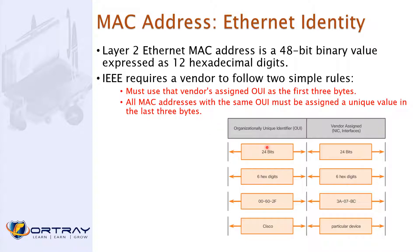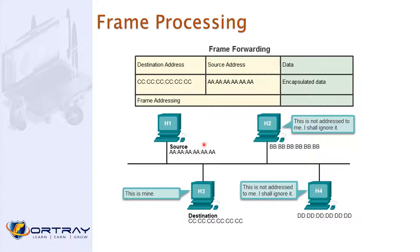In frame processing, a frame has a destination address and a source address plus encapsulated data. For example, if the destination is CCC and the source is AAA, a device with address BBB receives it and says 'this is not addressed for me, I shall ignore it.' The frame goes out everywhere initially and is finally received only by the device whose address matches — that device says 'this is mine.' That is how frame processing works.